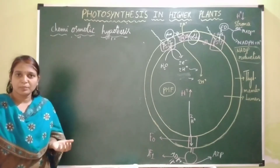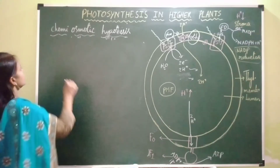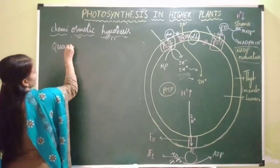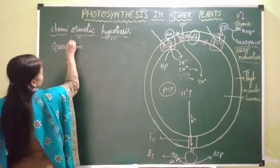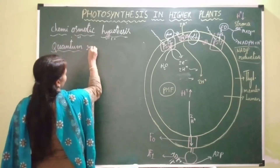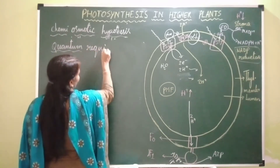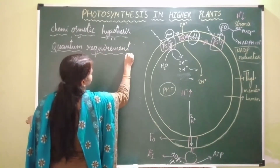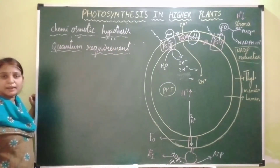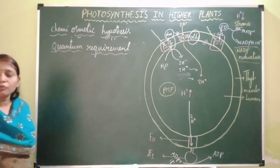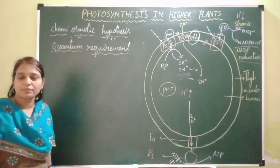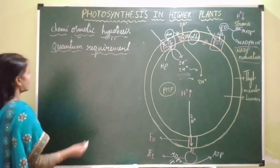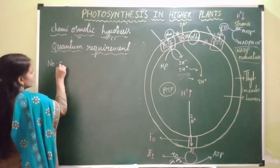Let us study quantum requirement and quantum yield. Quantum requirement is nothing but it is the number of photons — light photons or light quanta — required for the release of one molecule of oxygen. That is called quantum requirement.